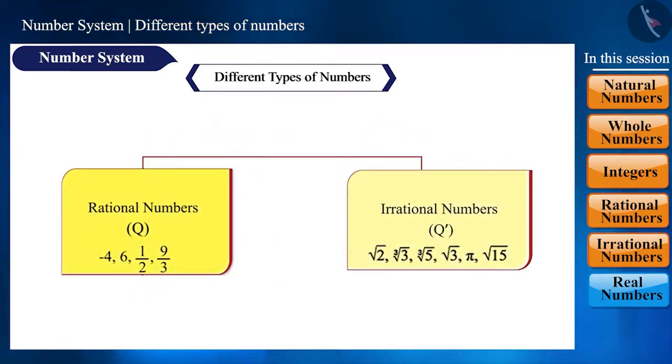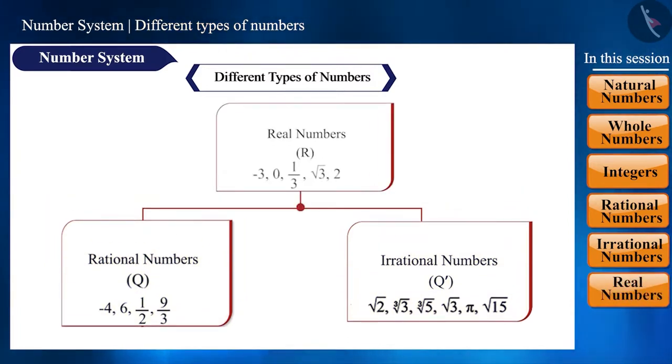The rational and irrational numbers combine to form real numbers, which are represented by the symbol R. That is, under real numbers, there are only two types of numbers, rational and irrational.